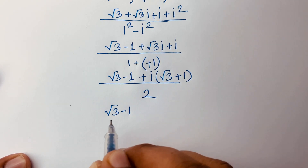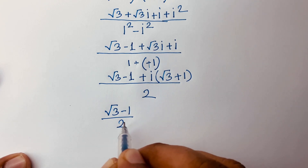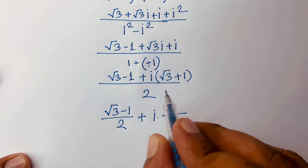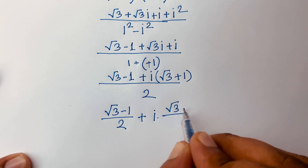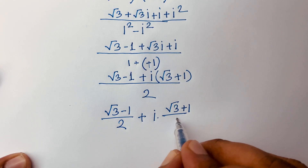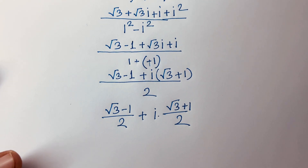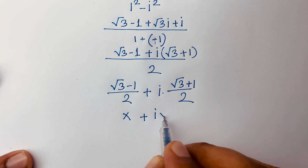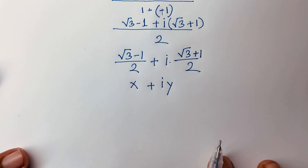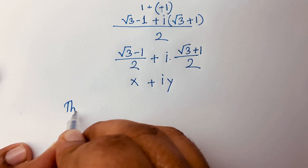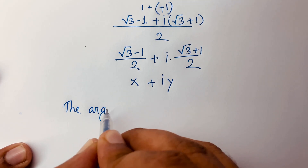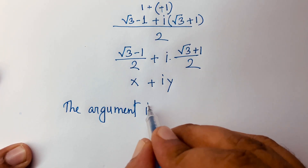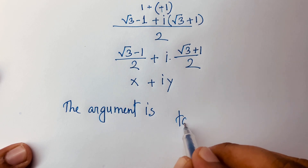The equation becomes (√3 - 1)/2 as the real part, plus i times (√3 + 1)/2 as the imaginary part. This is in the form x + iy, where x = (√3 - 1)/2 and y = (√3 + 1)/2. The argument is tan inverse of y over x.